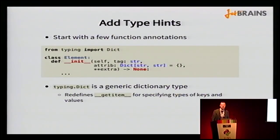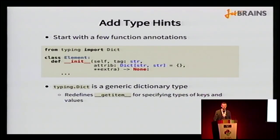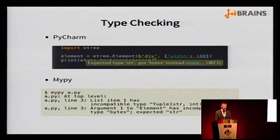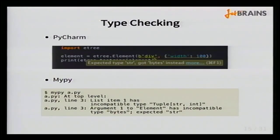Let's start annotating just the constructor of the element class. We add the str annotation for the tag parameter — we expect it to be a string, not a byte string — and we expect the attribute parameter to be a dictionary of string keys and string values. With these type hints, PyCharm underlines problematic elements with a yellow squiggly line saying it expects type string but got bytes. MyPy outputs the same information in textual form.